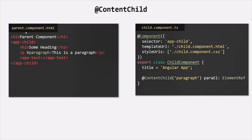Here we have the view template of the parent component and here we have the component class of the child component. Now let's say in the component class of the child component, I want to get a reference of this paragraph element. This paragraph element we are projecting from the parent component, so we want to get its reference in the child component class. For that, we can use the ContentChild decorator. Basically, we are creating a property called paraEl and decorating it with the ContentChild decorator.